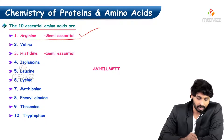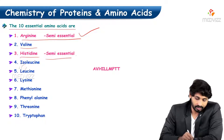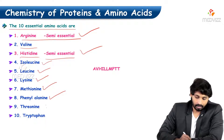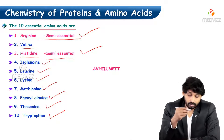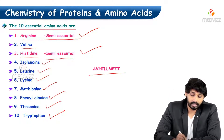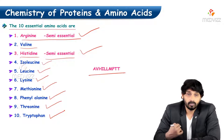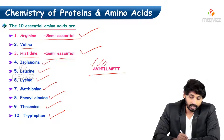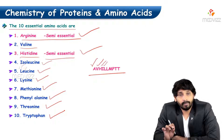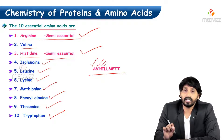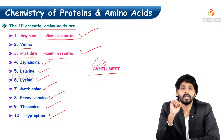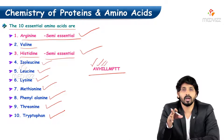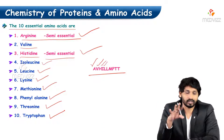Arginine is semi-essential; valine is essential; histidine is also semi-essential; and isoleucine, leucine, lysine, methionine, phenylalanine, threonine, and tryptophan are all essential. To remember them, use the mnemonic A, V, H, I, L, L, M, P, T, T — where A = arginine, V = valine, H = histidine, I = isoleucine, L = leucine, L = lysine, M = methionine, P = phenylalanine, T = threonine, T = tryptophan. These are a mix of branched-chain, aromatic, sulfur-containing, hydroxyl, and basic amino acids.